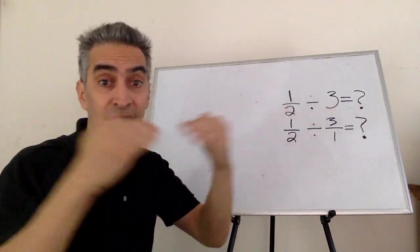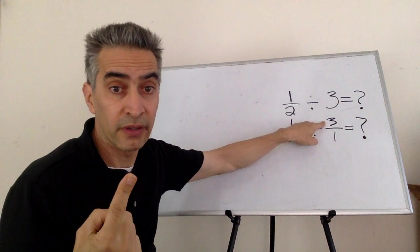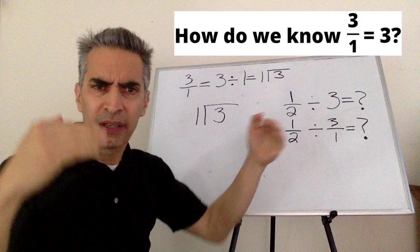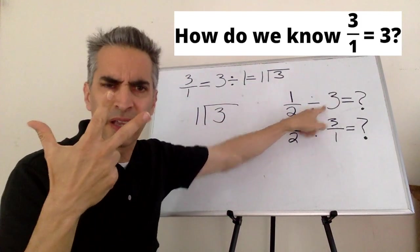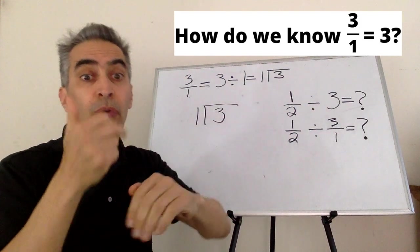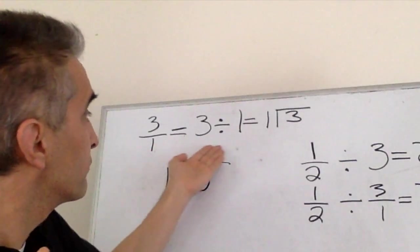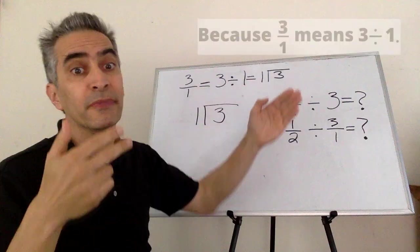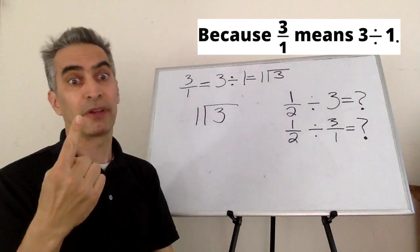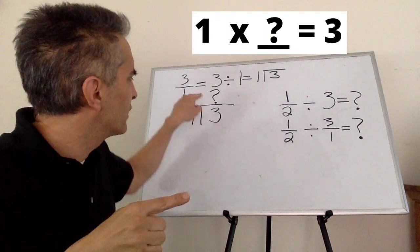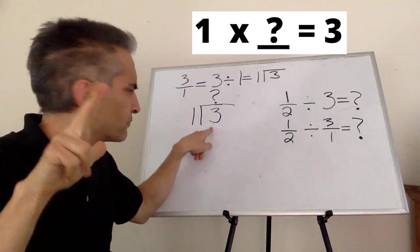This three equals three over one. Why is that? How do we know that three over one equals three? Three over one means three divided by one. One times what number here will equal three?